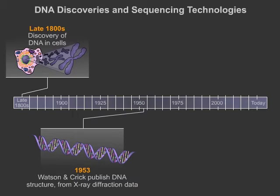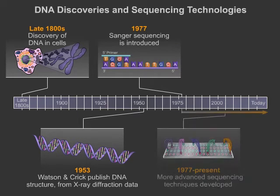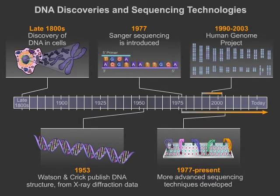With this information, Sanger developed an efficient method to sequence DNA. Over time, sequencing technologies advanced, and by 2003, the impressive Human Genome Project was completed, with the complete sequencing of the over 3 billion base pair human genome.